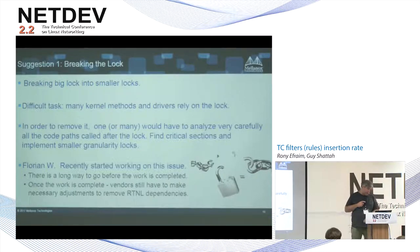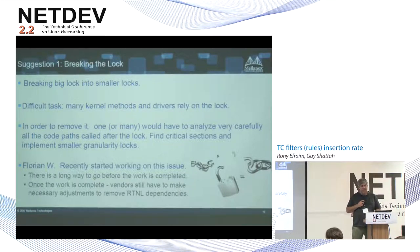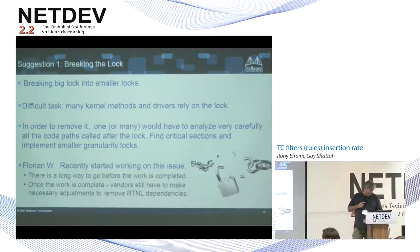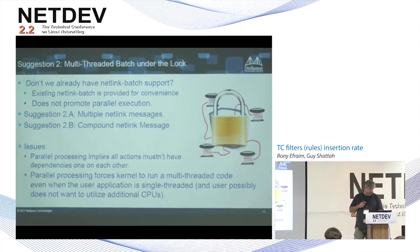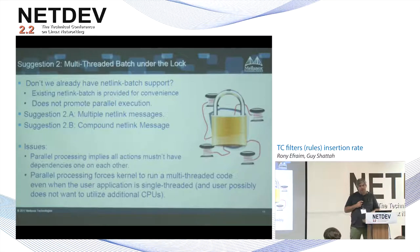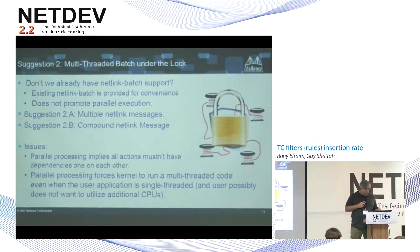What we are suggesting: breaking the lock is what I mentioned before, but it's a difficult task — Florian started the work but it looks like it will take a long time. The other option we're suggesting is to do multi-threading under the lock — you take the RTNL lock, batch a lot of filter rules you want to add, and then use multi-threading below the lock so you can increase the performance.